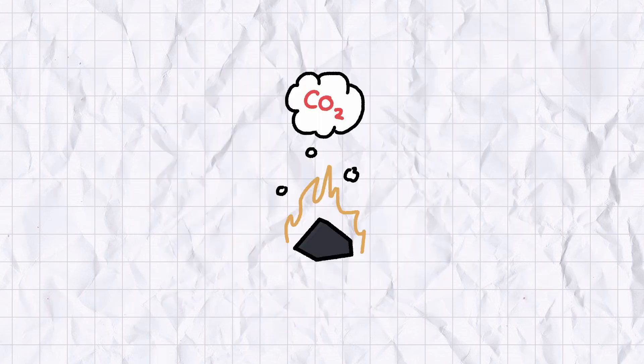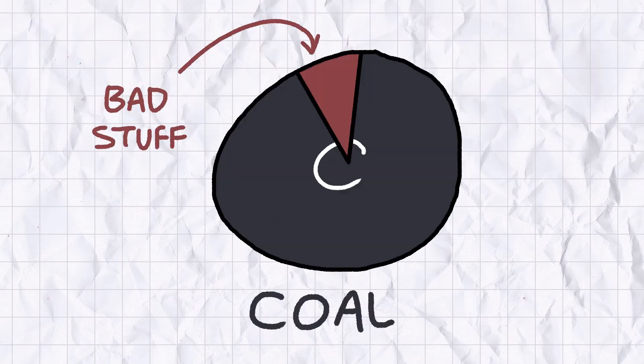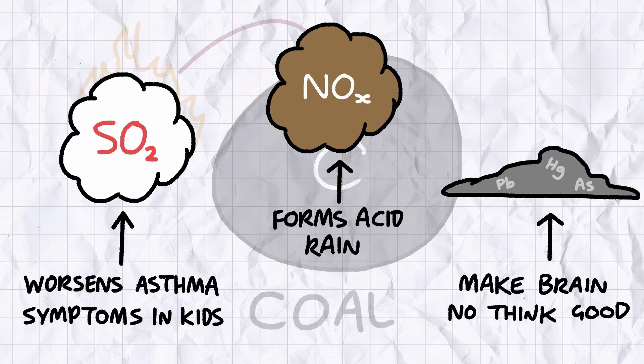Now, this is standard fare for fossil fuels, but coal is a particularly dirty source of energy. In practice, coal is never found in nature as pure carbon. Burning it releases a slew of awful pollutants like sulfur dioxide, nitrogen oxides, and heavy metal residues like mercury and lead.